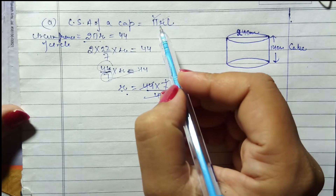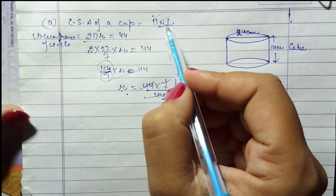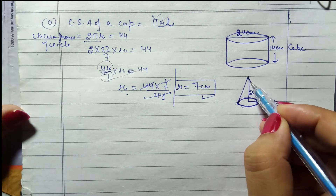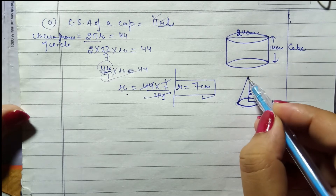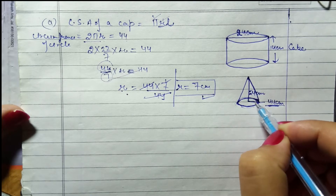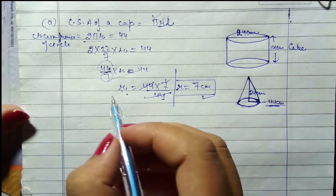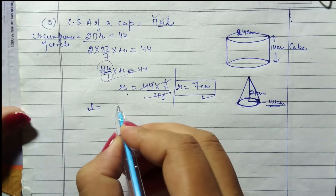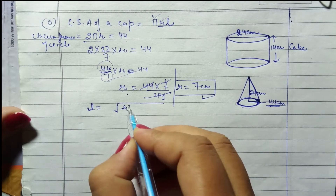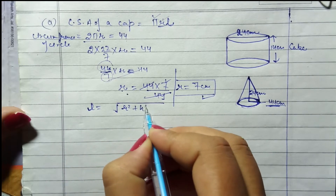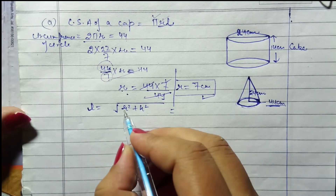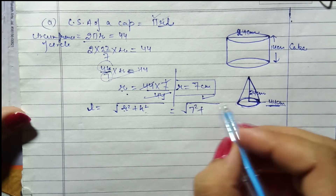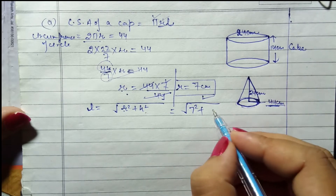Clear? r ki value bhi humne nikal li. Ab aati hai baat slant height ki. Yeh hoti hai l, slant height. Isko hum kaise nikaalte hain? Iska formula hota hai: square root of (r² + h²). Yahan par r kitna hai? 7. To 7² plus height kitna de rakha hai humein? 24. To 24².